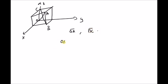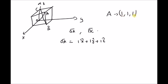Obviously, the vector OA should be equal to 1·x̂ + 1·ŷ + 1·ẑ. The vector OA is defined as follows because the coordinates of point A are (1, 1, 1) and the coordinates of the origin are (0, 0, 0). So the vector OA is 1·x̂ + 1·ŷ + 1·ẑ.